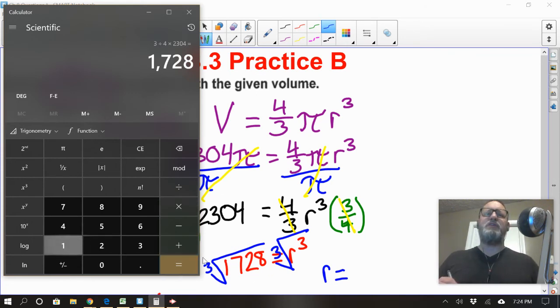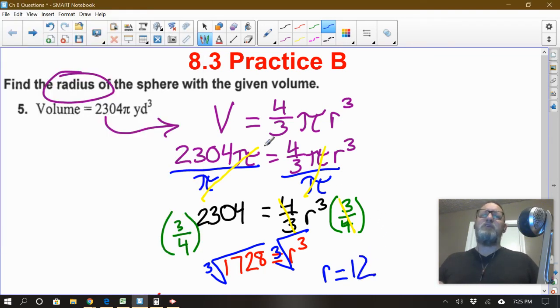So 12 times 12 times 12. Hopefully I'm right. We'll adjust our guess if I'm wrong. Oh yeah. I nailed it. So 1,728. Perfect. So the cube root of 1,728 is 12. Now what were we measuring in yards? So the radius of this sphere would be 12 yards.